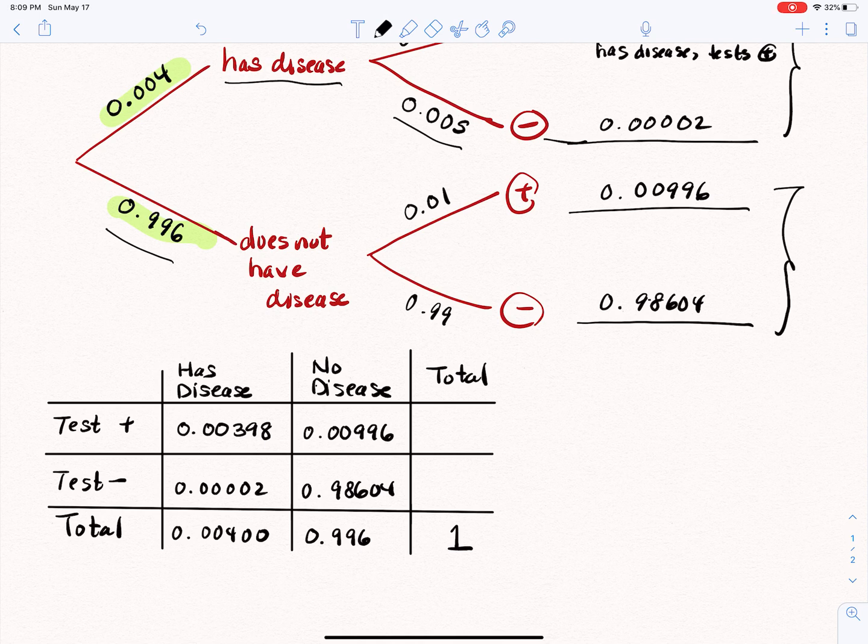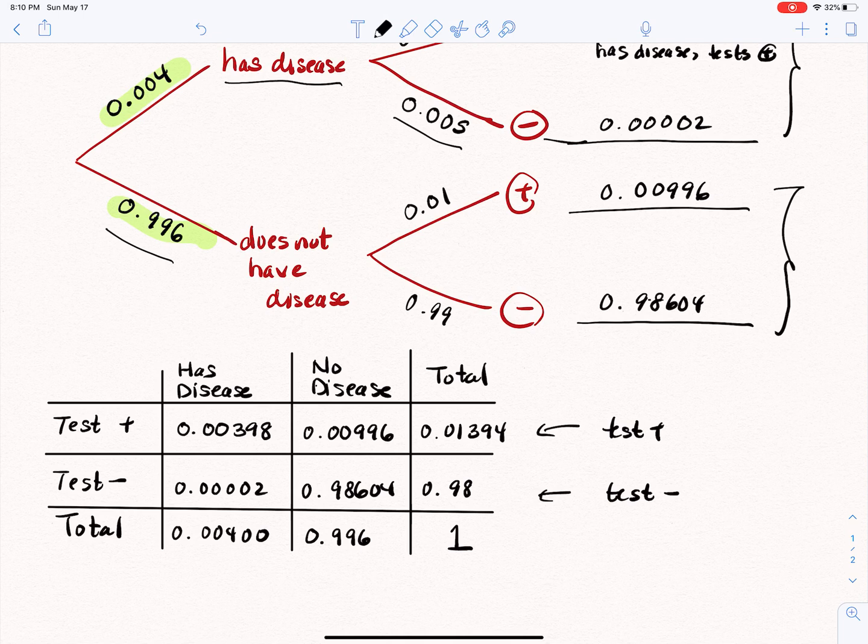But now the new information that we get is that we're able to figure out how many test positive overall, or I should say what proportion, and what proportion test negative overall. So if we were to add the two items in the first row, that probability would be 0.01394, and the other one would be 0.98606.